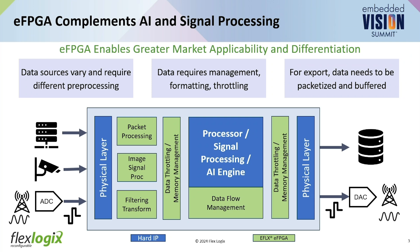That data also has to be formatted and managed before it goes into the processor, so we're not starving it and keeping it running efficiently. And when you're done processing, you have to get data back off chip — there's usually some data throttling, packetizing, or protocol adaptation to make that happen. There are a lot of opportunities here to increase your marketability.